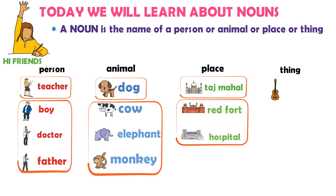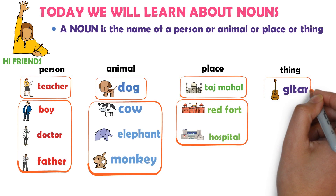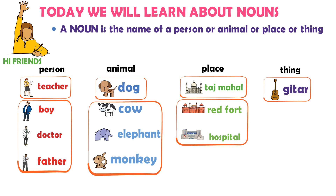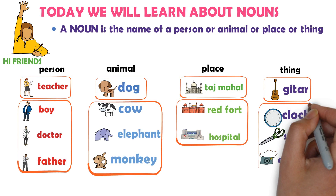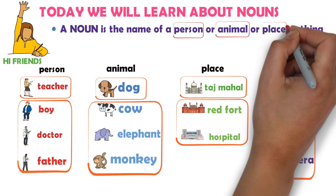Thing example: Guitar is a name of a thing, so guitar is a noun. Clock is a name of a thing. Scissors is a name of a thing. Camera is a name of a thing. So clock, scissors, and camera are nouns. So a noun is a person, or animal, or place, or thing.